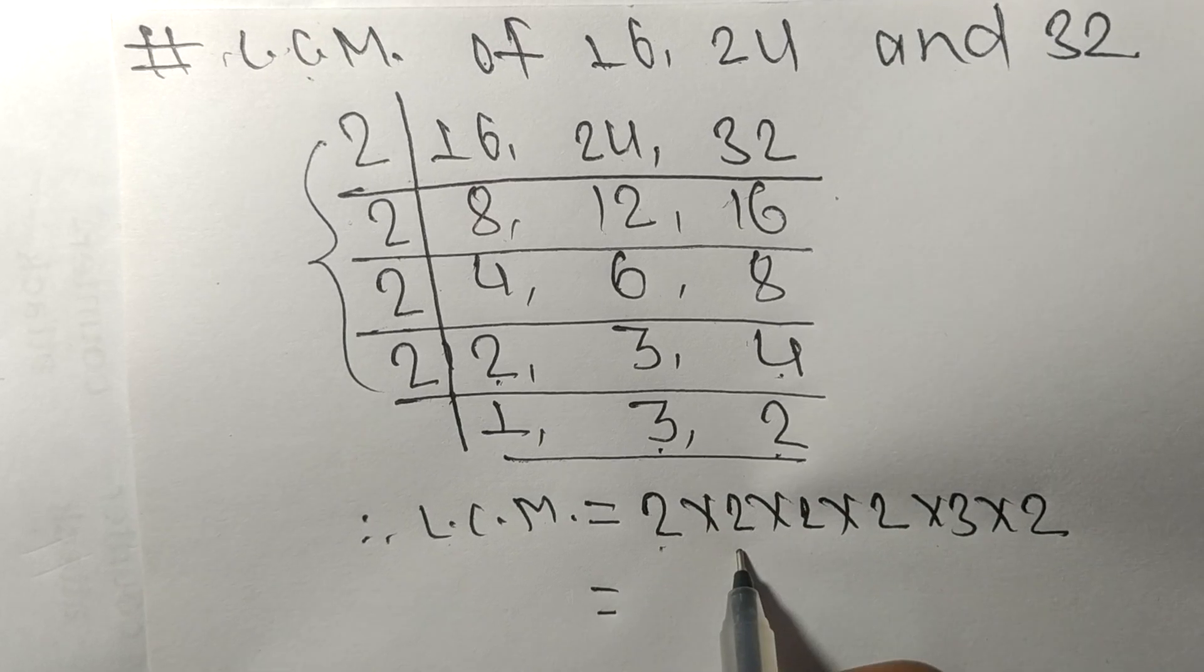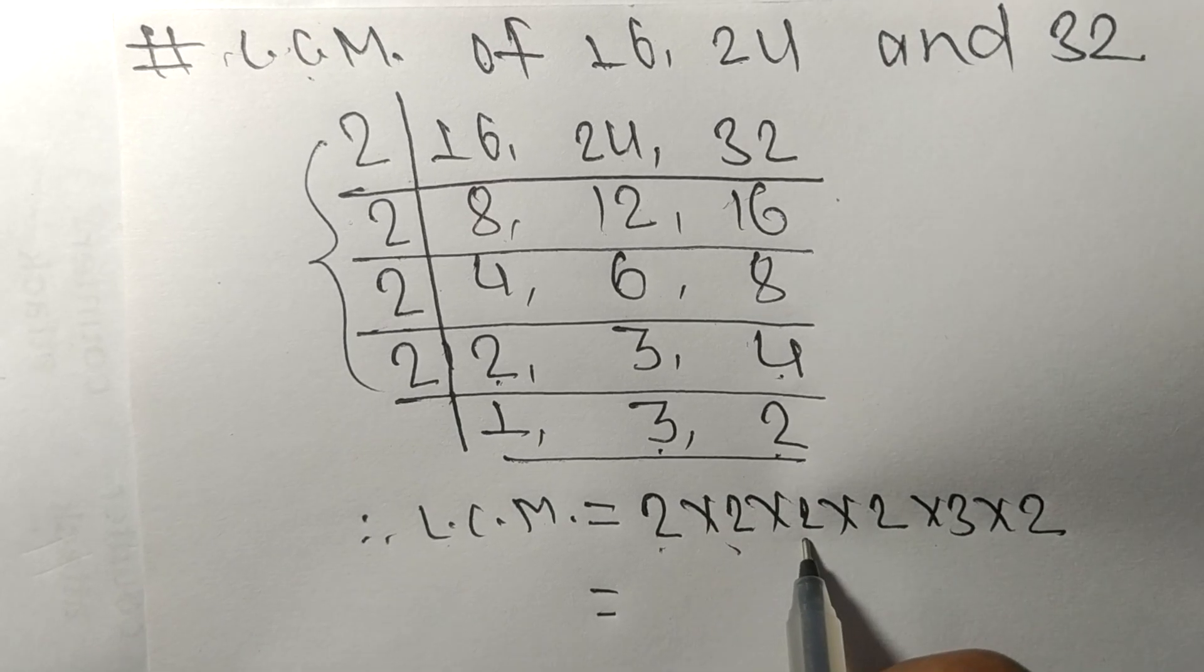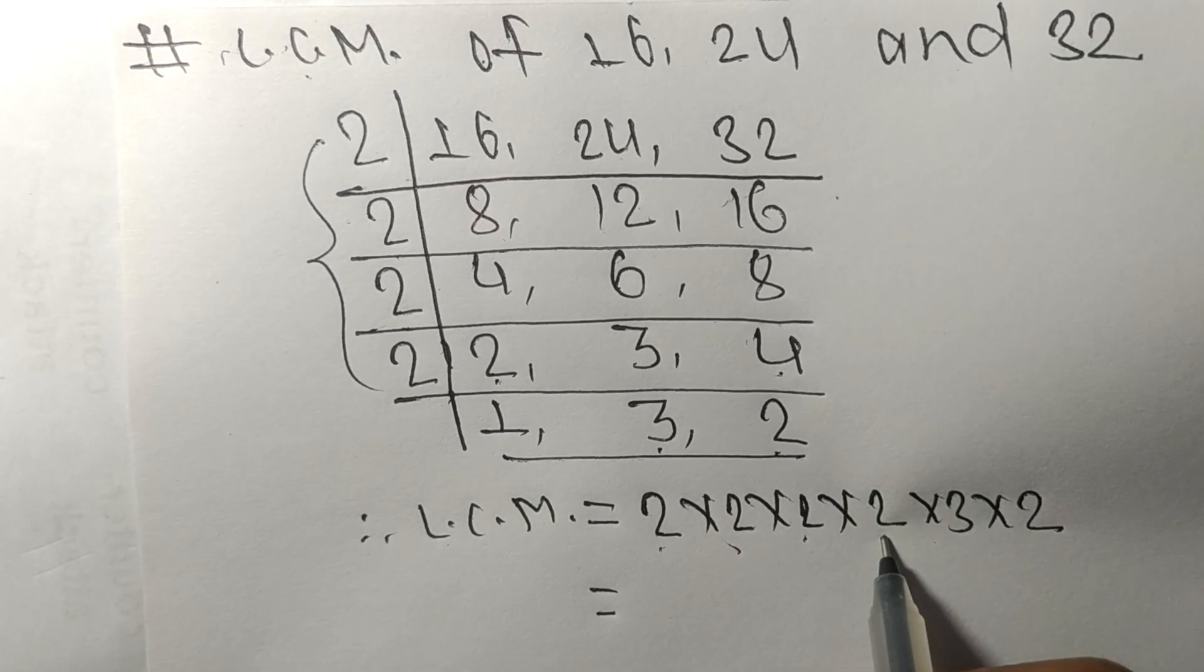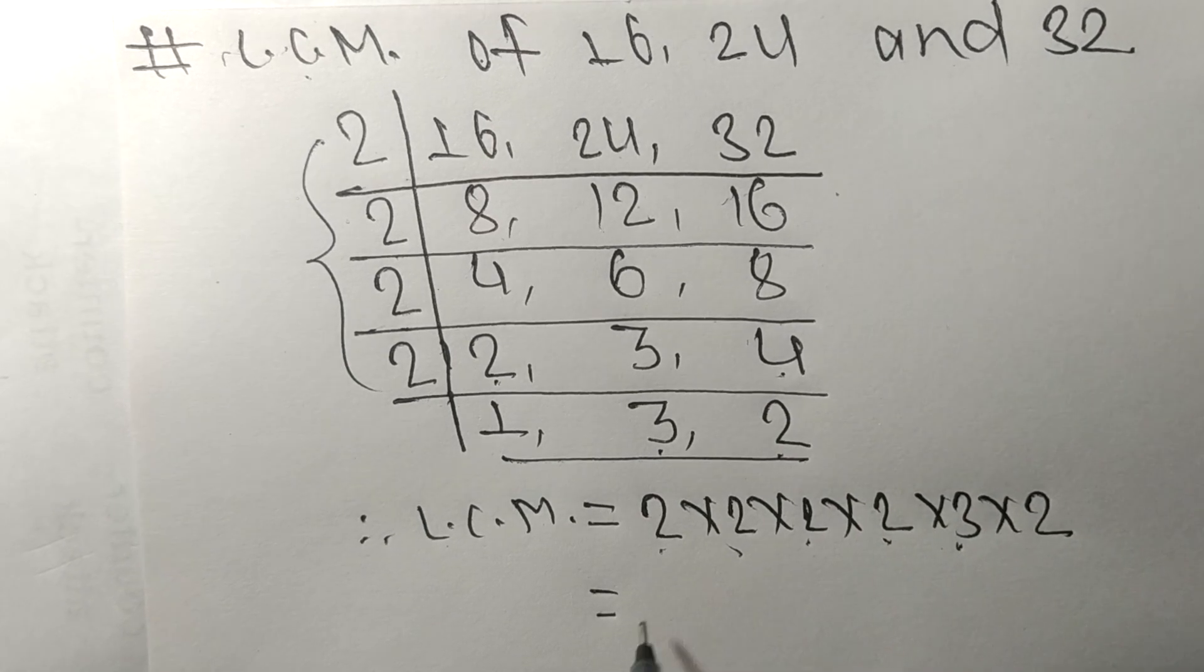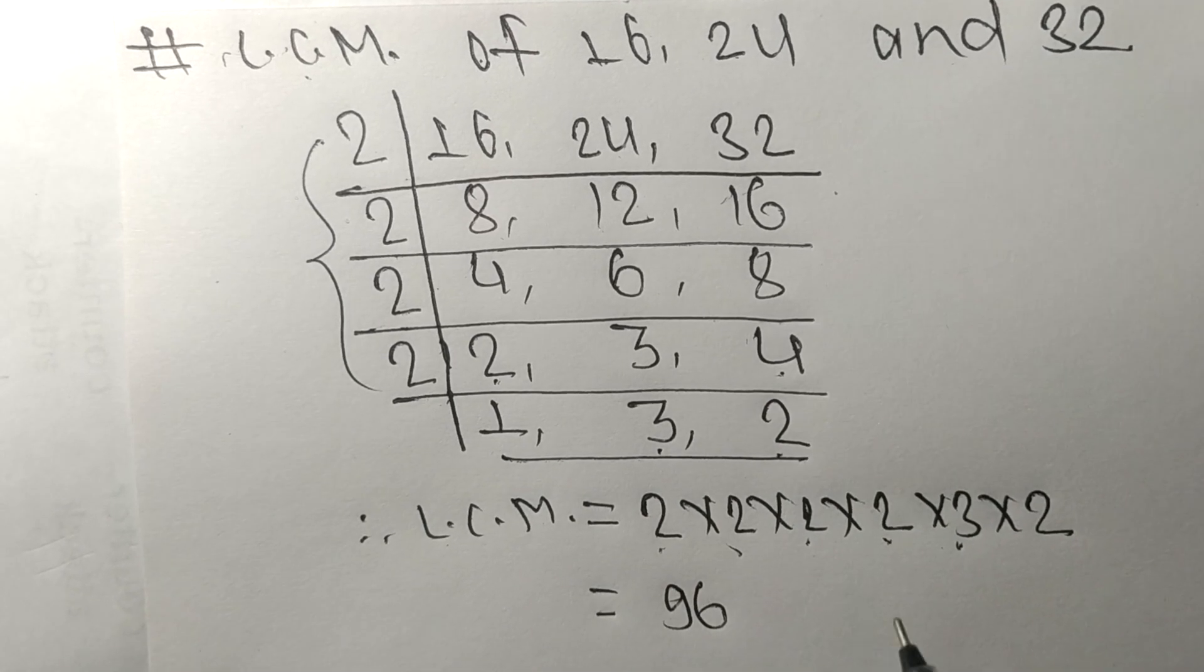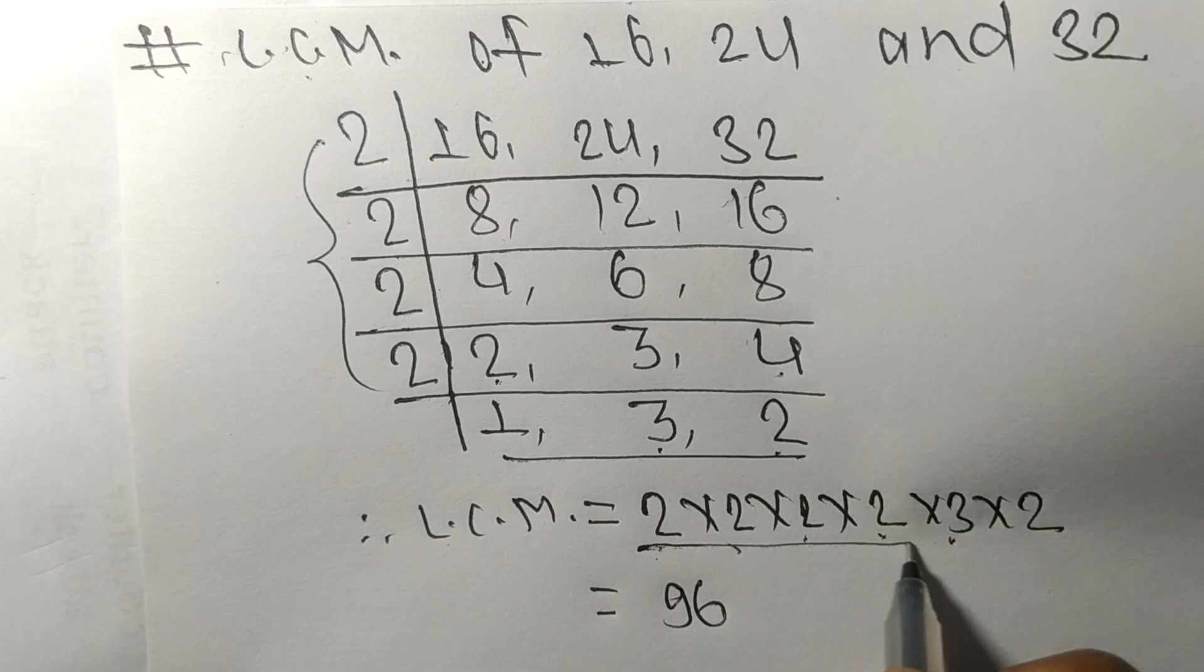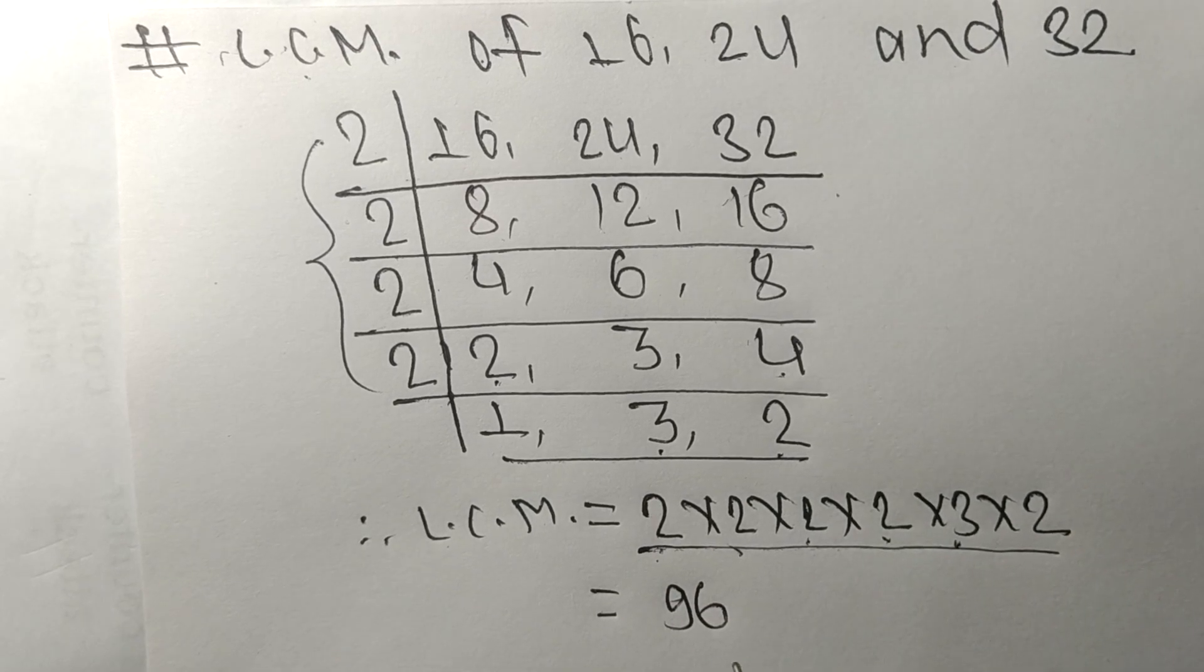2 times 2 is 4, 4 times 2 is 8, 8 times 2 is 16, 16 times 3 is 48, 48 times 2 is 96. By multiplying all these numbers, we get 96.